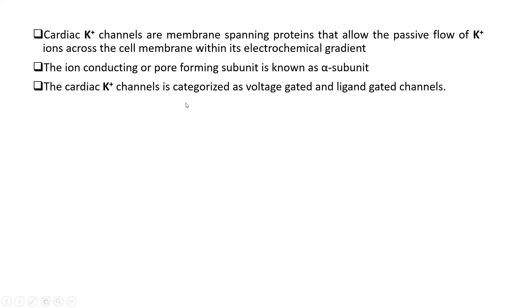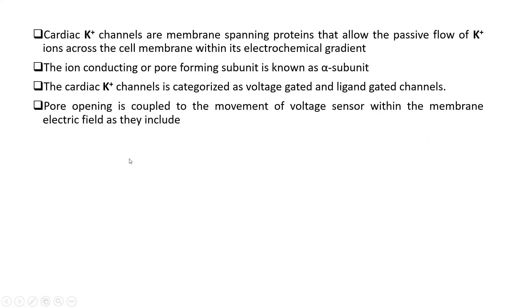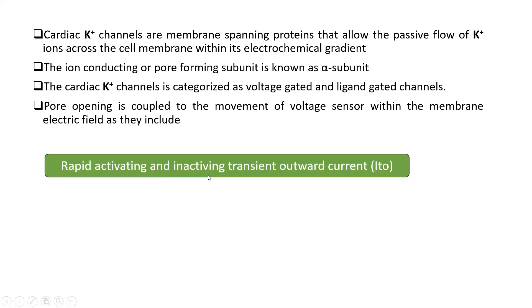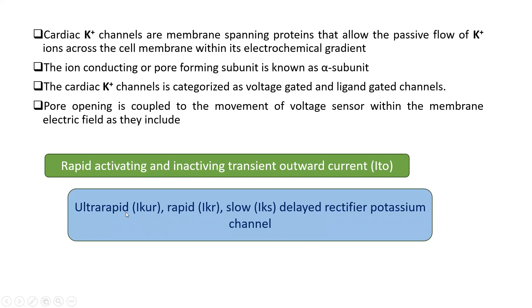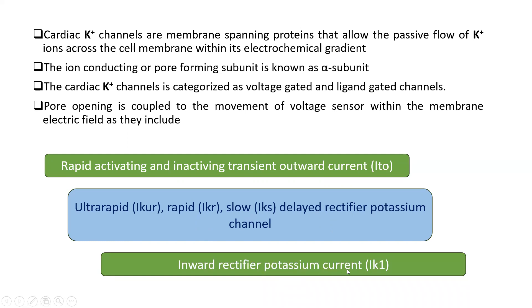The cardiac potassium channel is categorized as a voltage-gated and ligand-gated channel. The pore opening is coupled to the movement of the voltage sensor within the membrane electrical field. These include the rapid activating and inactivating transient outward current ITO, ultra-rapid IKUR, rapid IKR, slow IKS delayed rectifier potassium channels, and inward rectifier potassium current IK1.